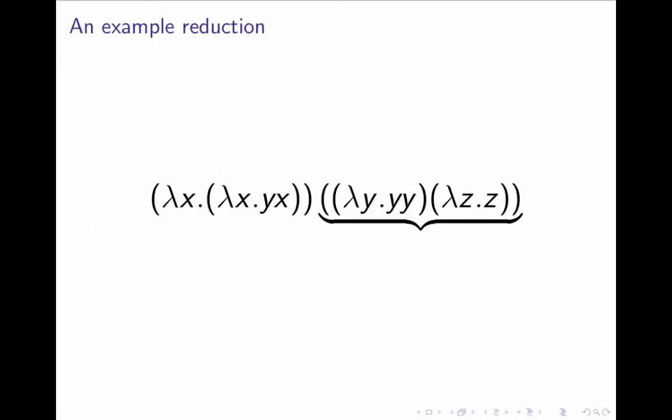Here's a tiny example of a reduction to show you what's going on. So, here is lambda x, lambda x, y, x, lambda y, y, lambda z, and this is a redex. We can see that we can use the beta rule here, and since we can, by the other two rules, we can reduce in any part of an application,